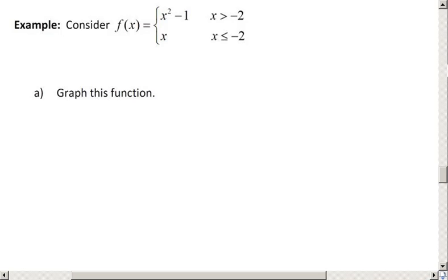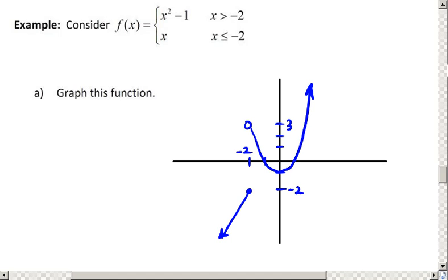So here we're given a piecewise function: f equals x squared minus 1 when x is greater than negative 2, and it's equal to x when x is less than or equal to negative 2. So here we go. Step 1 is make an accurate graph. So here is my graph.